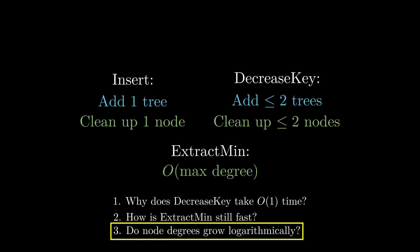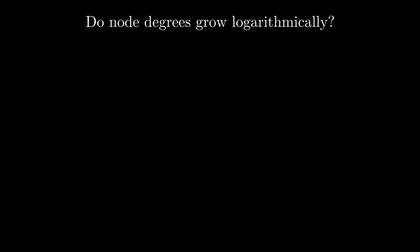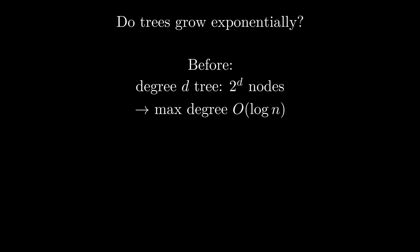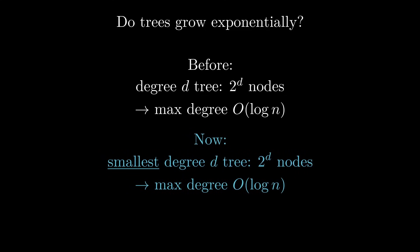This brings us to question 3: we need to show that with our DecreaseKey implementation, node degrees only grow logarithmically. Previously, we showed that every tree with degree d contained exactly 2^d nodes since all trees were binomial trees. With DecreaseKey, things are more complicated because our trees don't have a fixed shape anymore. What we need to do is look at the smallest tree for any given degree and show that even that worst-case tree contains at least exponentially many nodes. Let's look at a tree x with children y1 through y5. The size of x depends on the degrees of its children — higher degrees mean more grandchildren and therefore a larger tree.